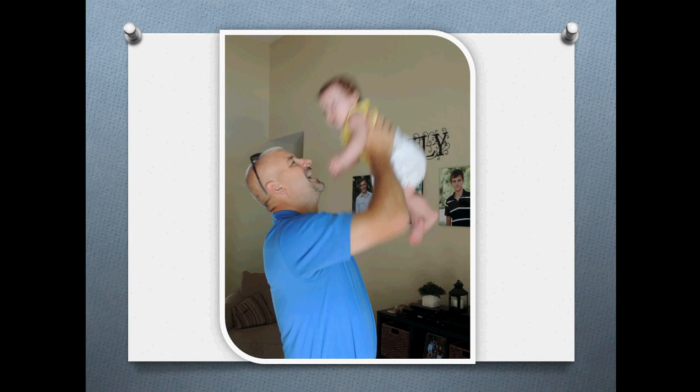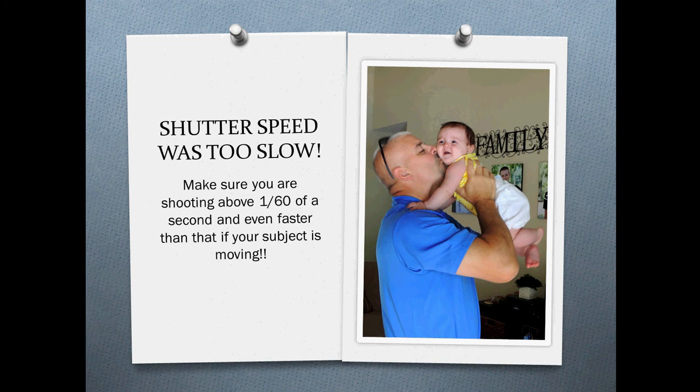We'll start with this picture of a man playing with a baby. Obviously we can tell that the photo is out of focus and blurry. Think about what might have gone wrong to cause it to be blurry. If you said the shutter speed was too slow, you were right.